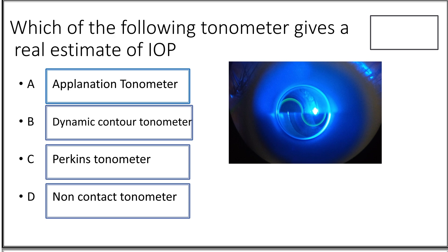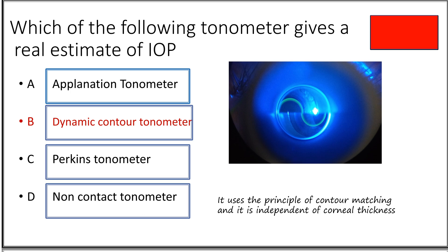Sixth question: which tonometer gives a real estimate of intraocular pressure? Option A applanation tonometer, option B dynamic contour tonometer, option C Perkins tonometer, option D non-contact tonometer. The answer is option B, dynamic contour tonometer, because corneal thickness is one factor that influences IOP. The dynamic contour tonometer uses a principle called contour matching and is independent of corneal thickness, giving a near-accurate assessment of intraocular pressure.